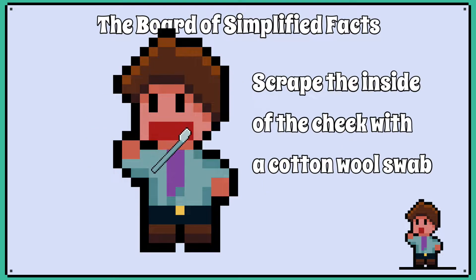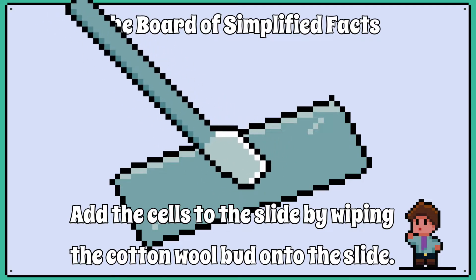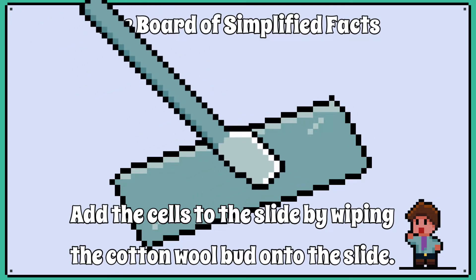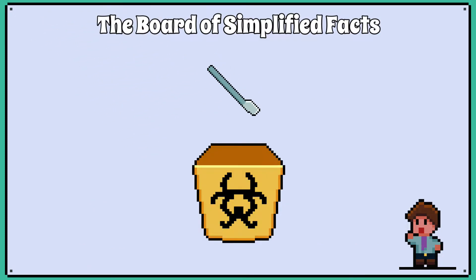Using a cotton wool bud, you first scrape the inside of your cheek — and I stress you must include the word 'inside'. Then you wipe the sampled cells onto the glass slide. The used cotton wool bud is then hygienically disposed of by placing it into disinfectant to avoid contamination.